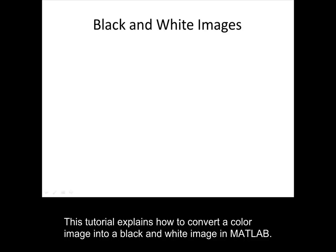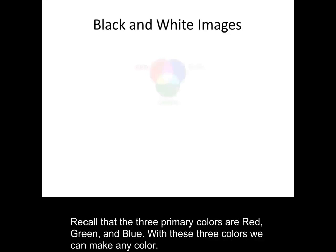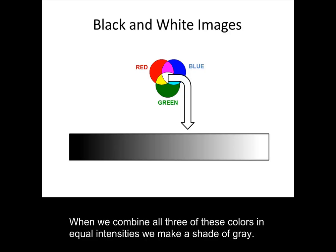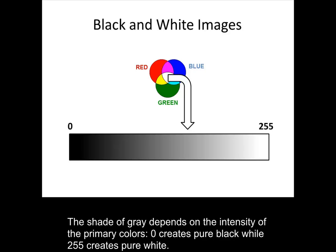This tutorial explains how to convert a color image into a black and white image in MATLAB. Recall that the three primary colors are red, green, and blue. With these three colors we can make any color. When we combine all three of these colors in equal intensities we make a shade of gray. The shade of gray depends on the intensity of the primary colors. 0 creates pure black while 255 creates pure white.